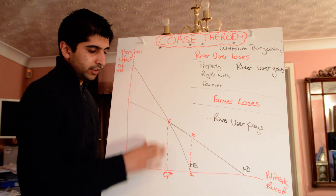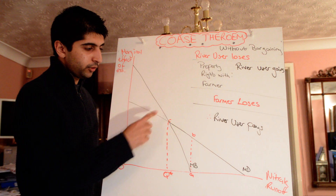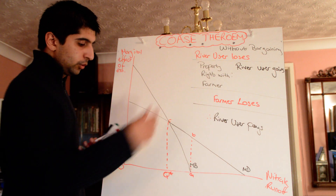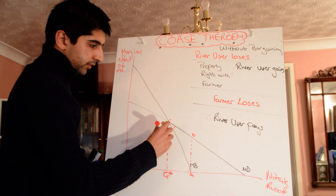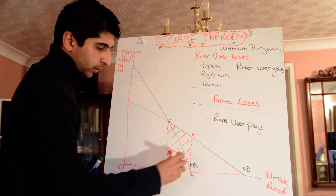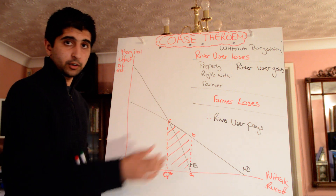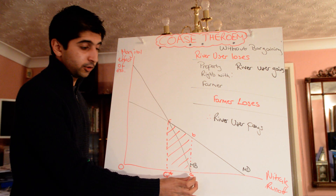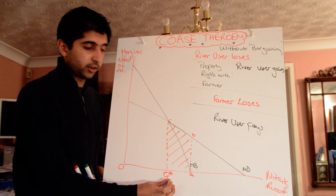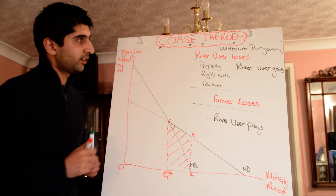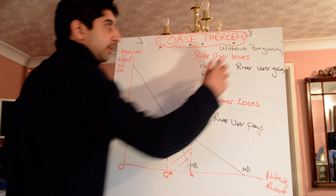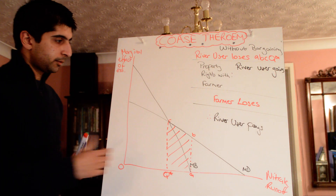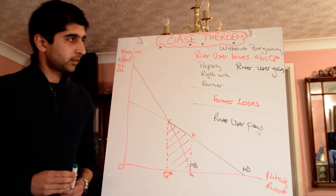By not producing at the socially optimum level Q* — where marginal benefit equals marginal cost — the river user loses the entire area underneath the marginal damage curve between where the farmer is producing and the socially optimum level. So that area — A, B, C, Q* — is what the river user loses without property rights.